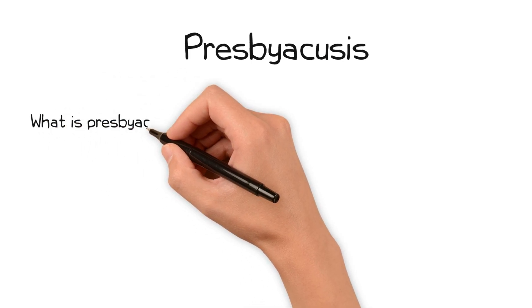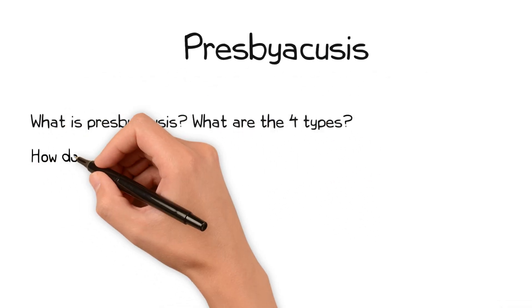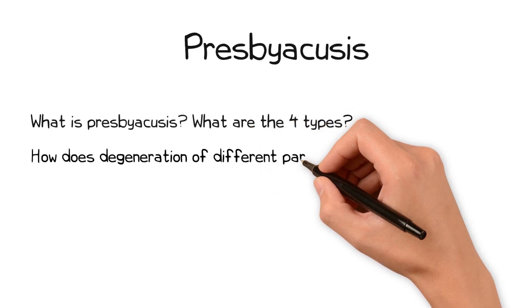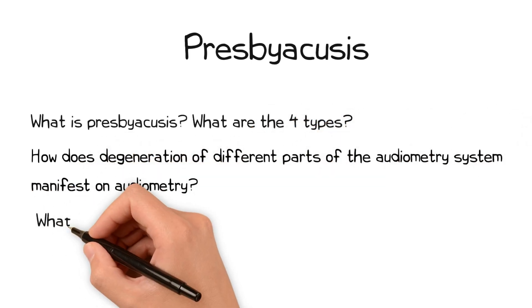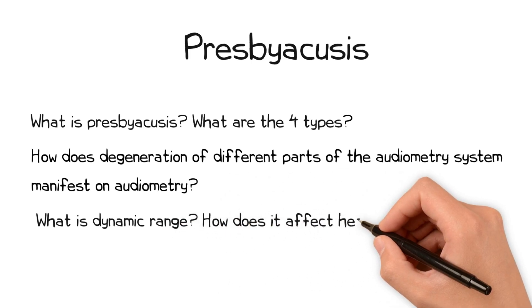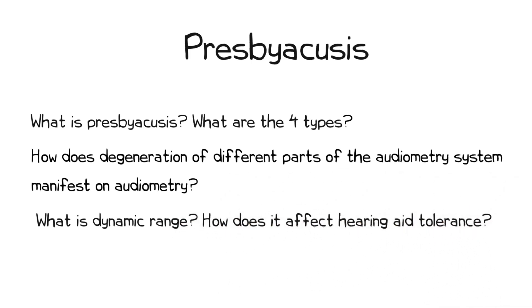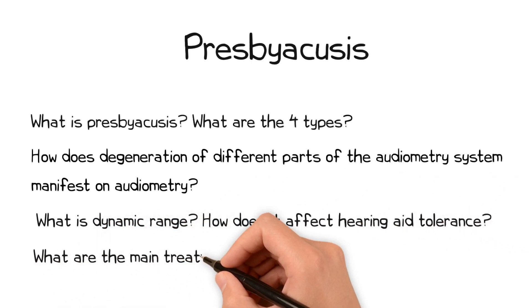What is presbyacusis and what are the four types? How does degeneration in different parts of the auditory system manifest on audiometry? What is dynamic range and how does this affect a patient's ability to tolerate hearing aids? And what are the main options to treat presbyacusis?